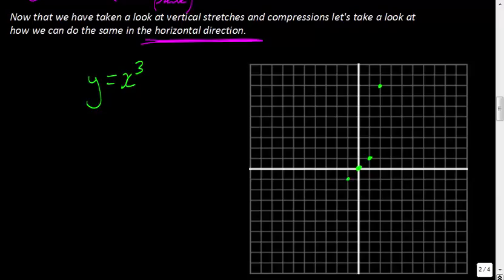We would do the same thing in the negative direction, and approximately you would get a cubic function that looks something like that. Now my question is: if we want to move something in the horizontal direction, how would we do that? Let's look at what happens if we manipulate the value for x that we put in.